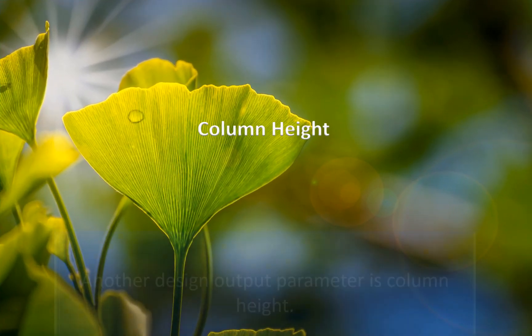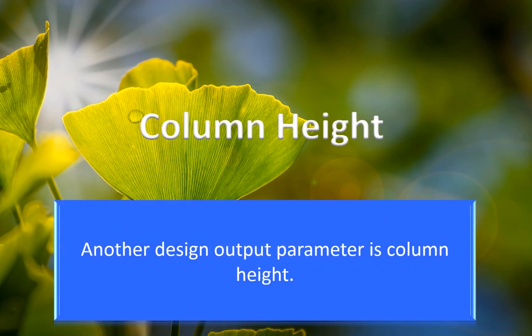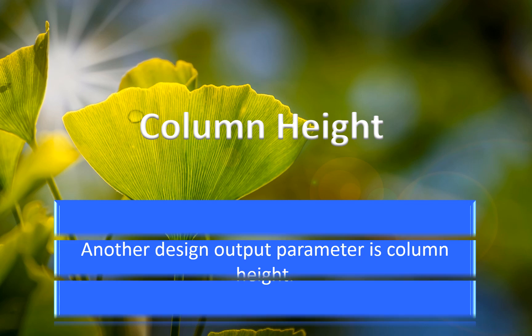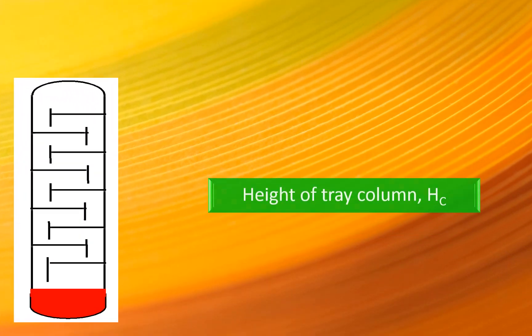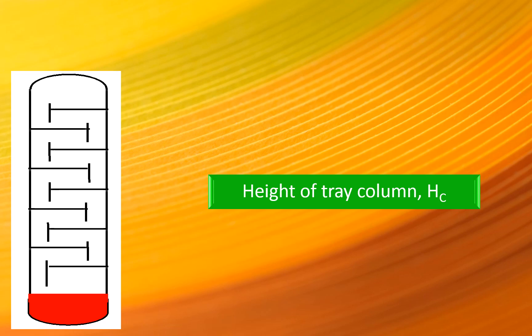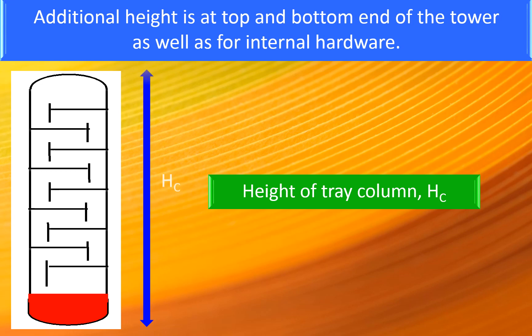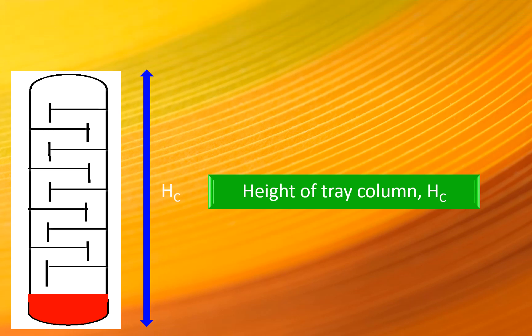Column Height. Another design output parameter is the column height. The height of a tray column is obtained from the number of actual stages and the tray spacing. Additional height is needed at the top and bottom end of the tower as well as for internal hardware.